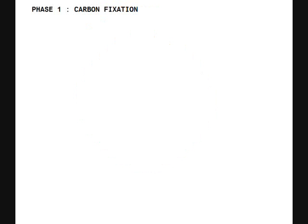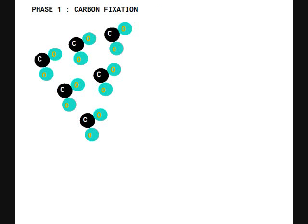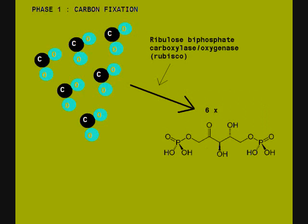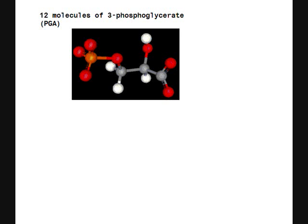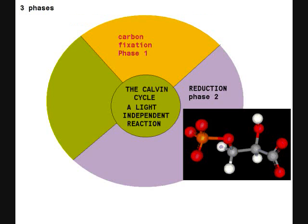Phase 1: carbon fixation. Six molecules of CO2 enter the Calvin Cycle. Ribulose biphosphate carboxylase oxygenase causes a reaction between carbon dioxide and ribulose 1,5-biphosphate to form 12 molecules of 3-phosphoglycerate.